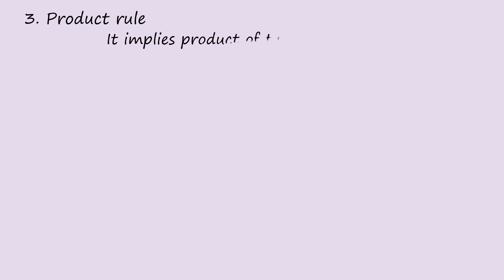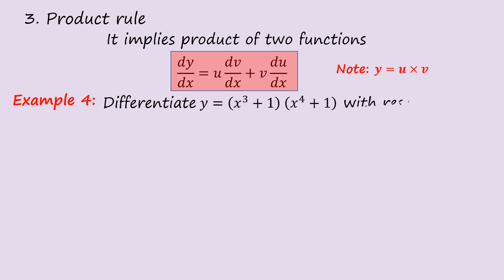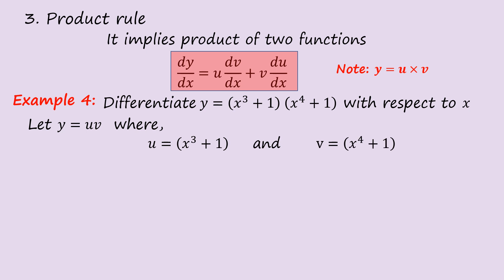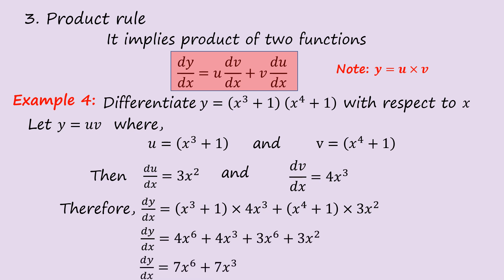Number 3: Product rule. It applies to the product of two functions. The formula is: dy/dx = u·(dv/dx) + v·(du/dx), where y = uv. Example 4: Differentiate y = (x³ + 1)(x⁴ + 1) with respect to x. Let u = x³ + 1 and v = x⁴ + 1. Then du/dx = 3x² and dv/dx = 4x³. Substituting into the formula and expanding, the answer is 7x⁶ + 7x³.